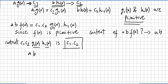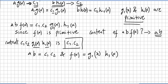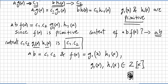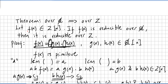Since both sides have the same content, ab equals c1·c2, and therefore f(x) equals g1(x)·h1(x). And g1(x) and h1(x) are in the ring of integers. That concludes the proof. So if f(x) is in the ring of integers and reducible over the rationals, then it is reducible over the integers too.